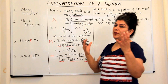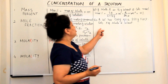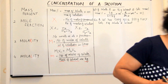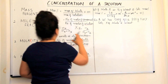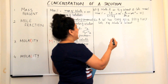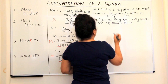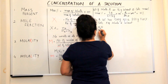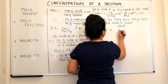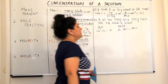Let's solve a numerical to make it clear. A solution has 1500 grams of water and 250 grams of sodium chloride. We are supposed to calculate the mole fraction of both the solute and the solvent. Since mole fraction requires number of moles and we've been given only grams, we first calculate the number of moles using: given mass divided by molar mass. The molar mass of water (H₂O) is 1×2 + 16 = 18 g/mol, and the molar mass of NaCl is 23 + 35.5 = 58.5 g/mol.